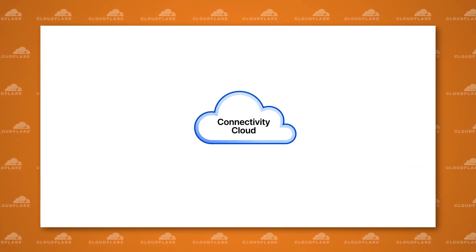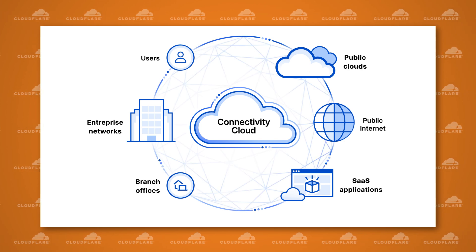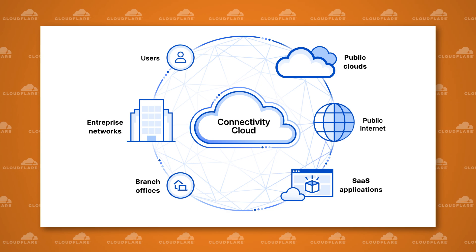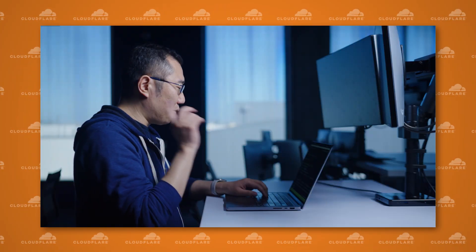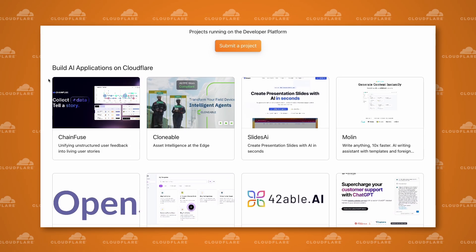Cloudflare's SASE platform is part of a greater connectivity cloud — a unified platform of cloud-native services that spans networking, security, and application performance, designed to help companies regain control over their technology infrastructure. Our connectivity cloud goes way beyond just protecting employees and their access to company resources. It's also used to protect public assets like websites and APIs. In fact, we run one of the world's fastest DNS servers. We've even exposed the underlying components of our platform, letting developers write and run their code directly on our network, so they can extend existing services or build entirely new applications.